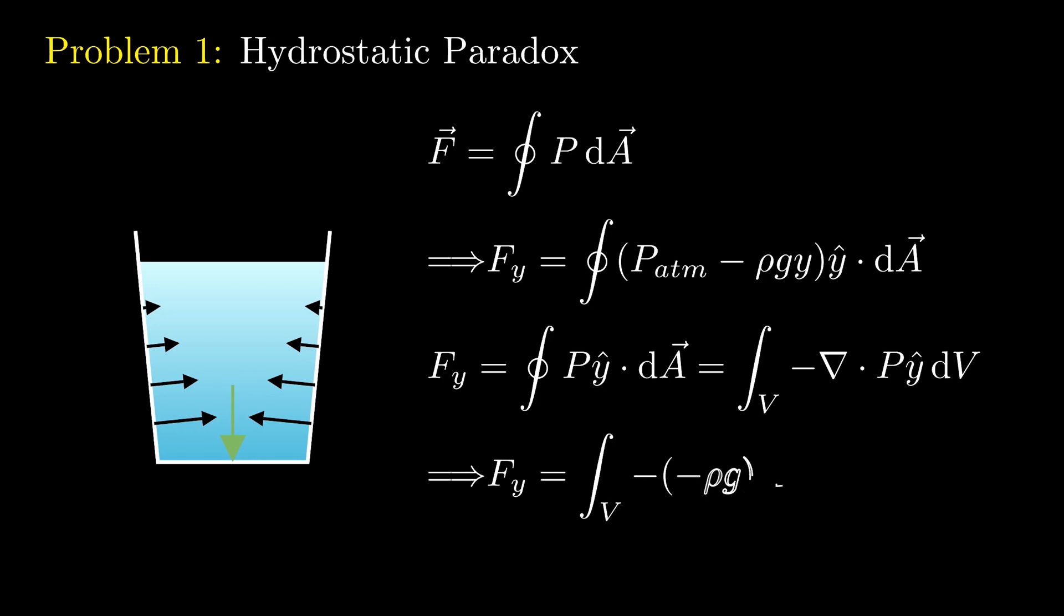Evaluating the divergence, which is just negative rho g, we get the volume integral of negative negative rho g, which is just rho g V. So the net upward force is simply the weight of the water, which is exactly what we want.